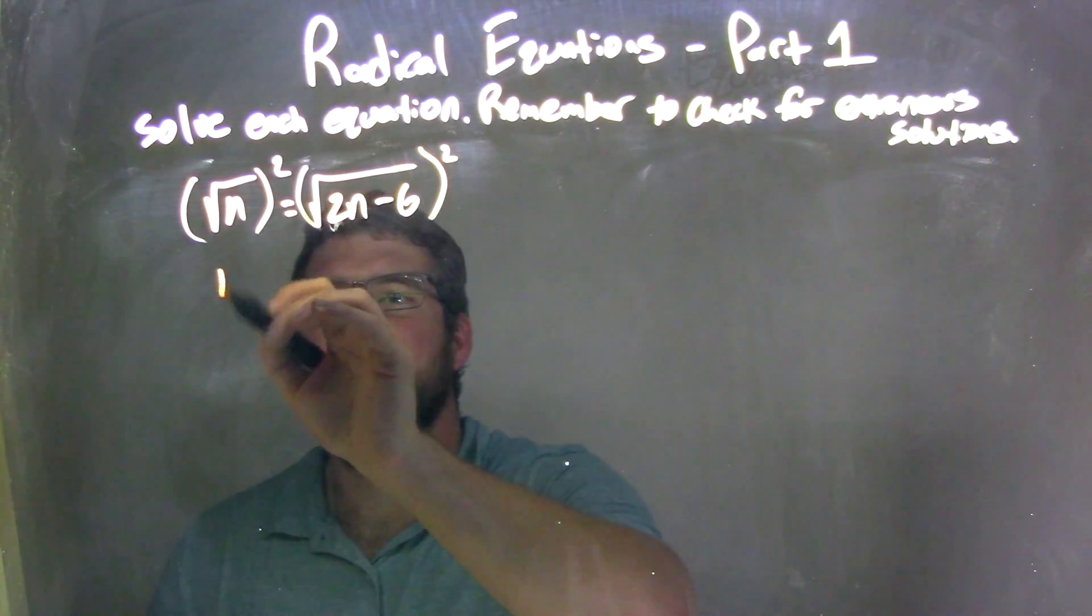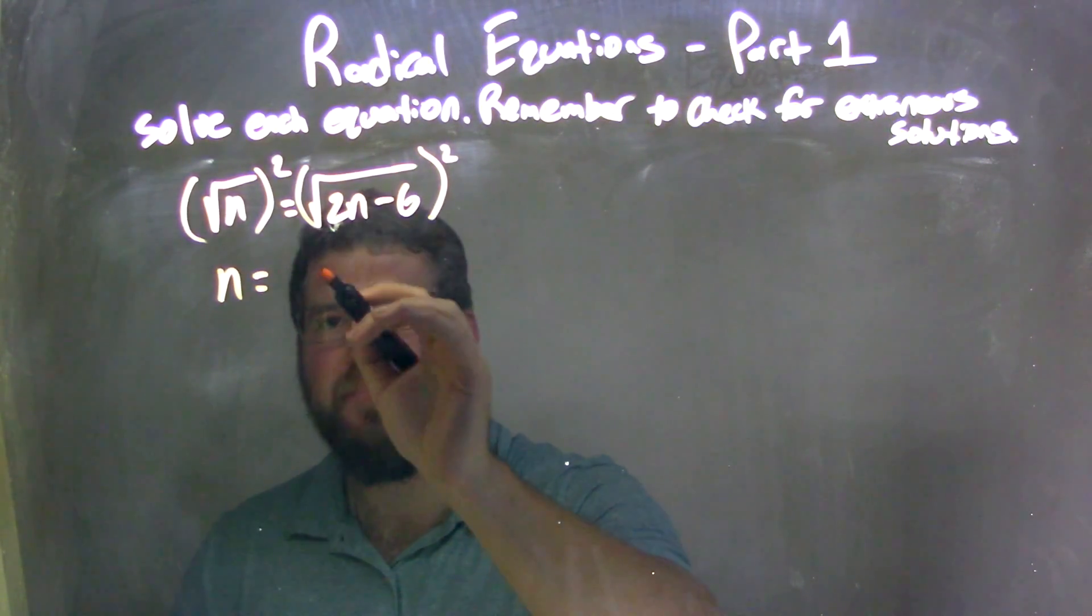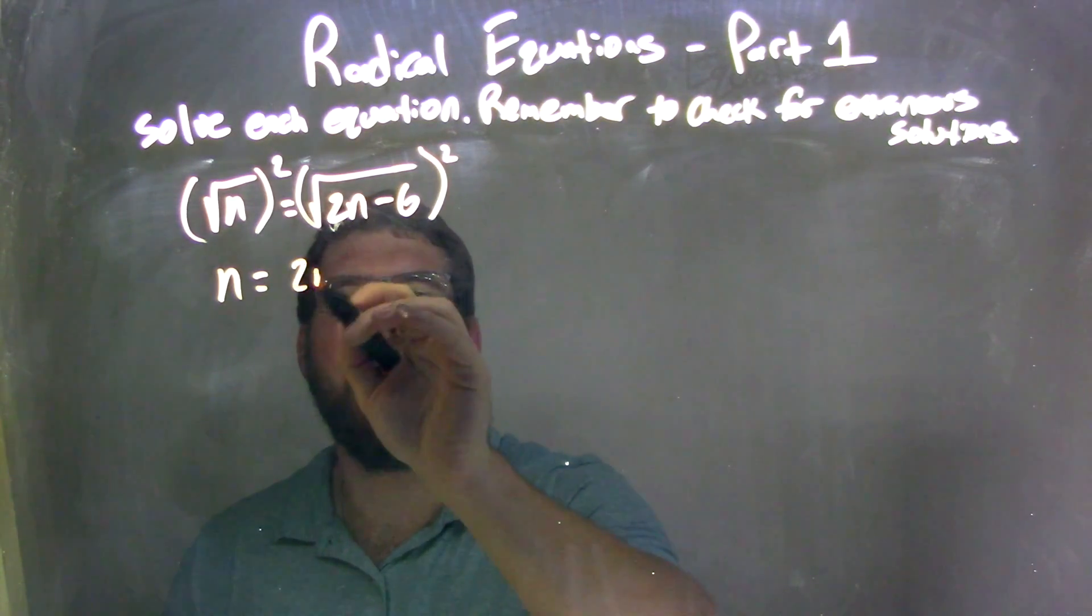Square root squared is eliminated. We'll have n on the left, equals on the right-hand side, 2n minus 6.